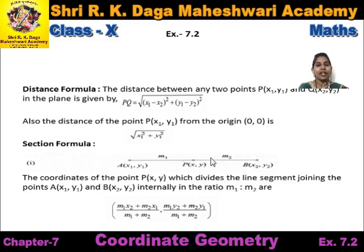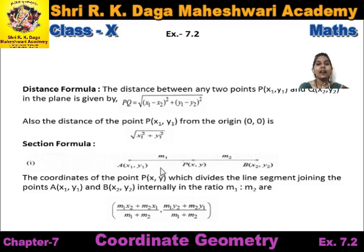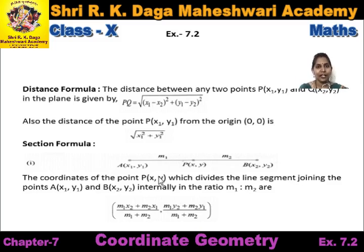Here you can see A and B are two points whose coordinates are (x1, y1) and (x2, y2) respectively. In between there is a point P whose coordinate is (x, y), and the ratio in which point P divides AB is m1 to m2. You are given two points A with coordinates (x1, y1) and B with coordinates (x2, y2), and in between them is a point P with coordinates (x, y), dividing AB in the ratio m1 to m2.